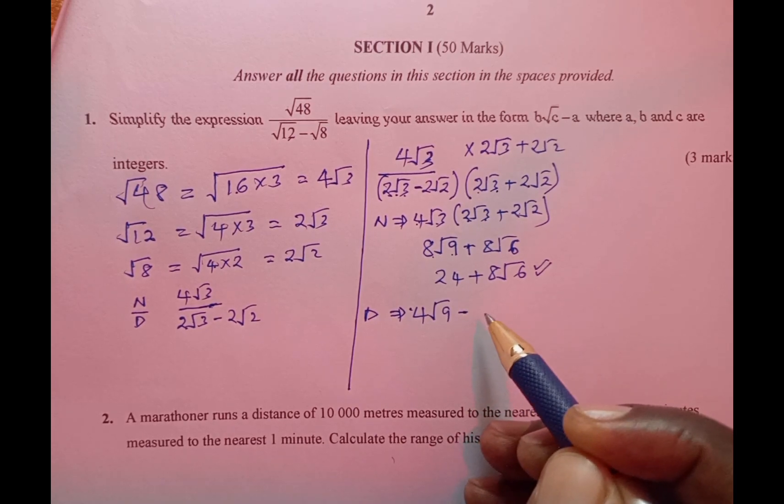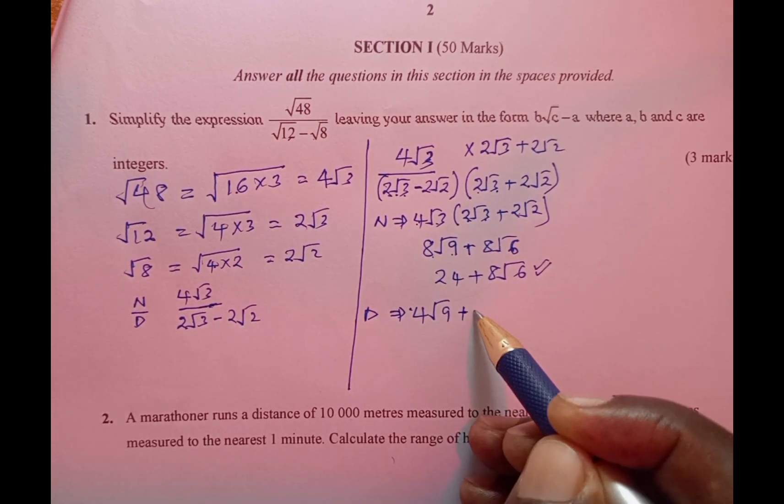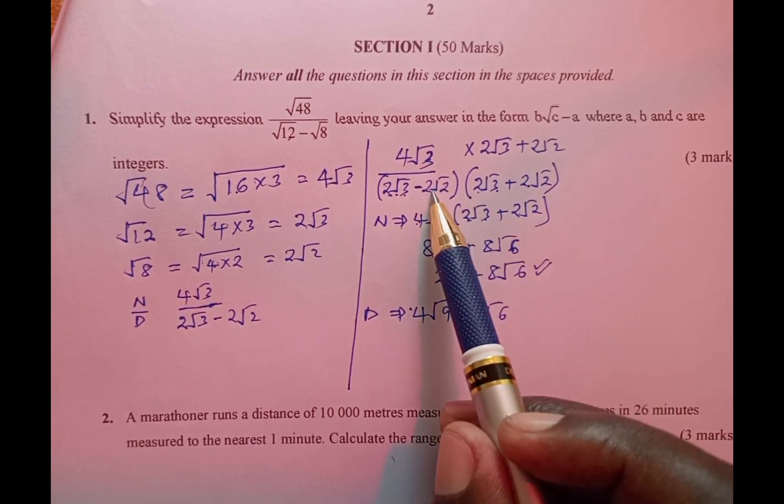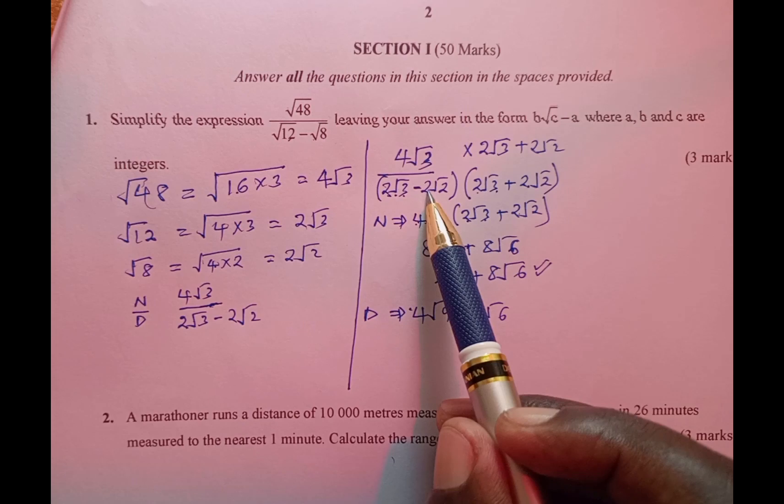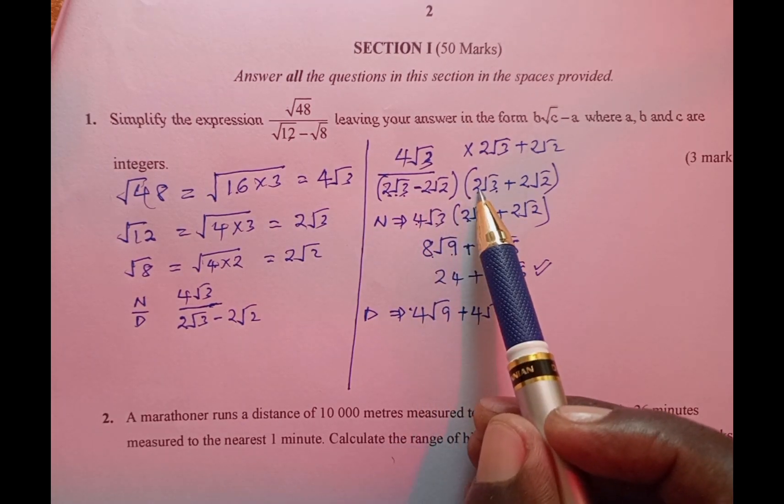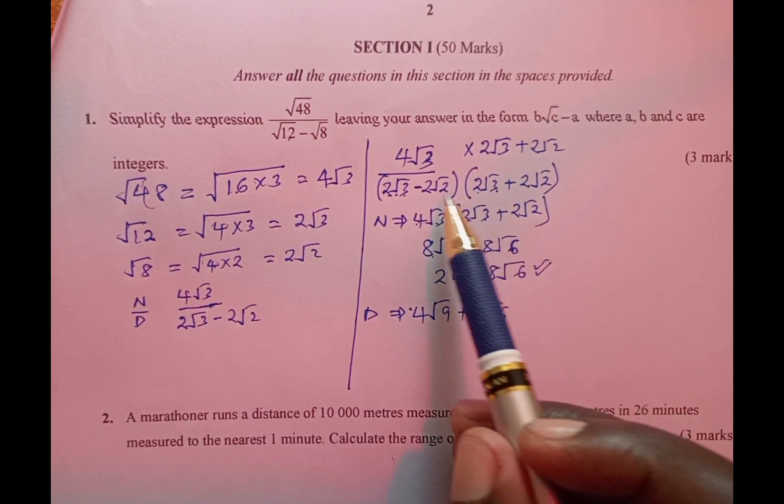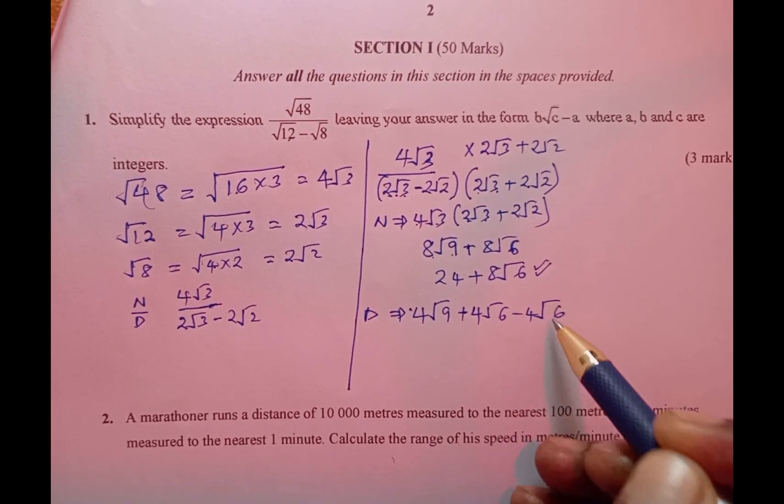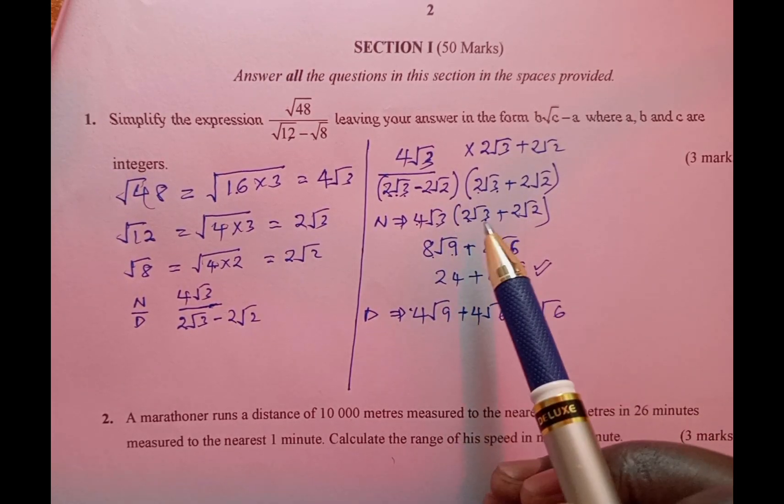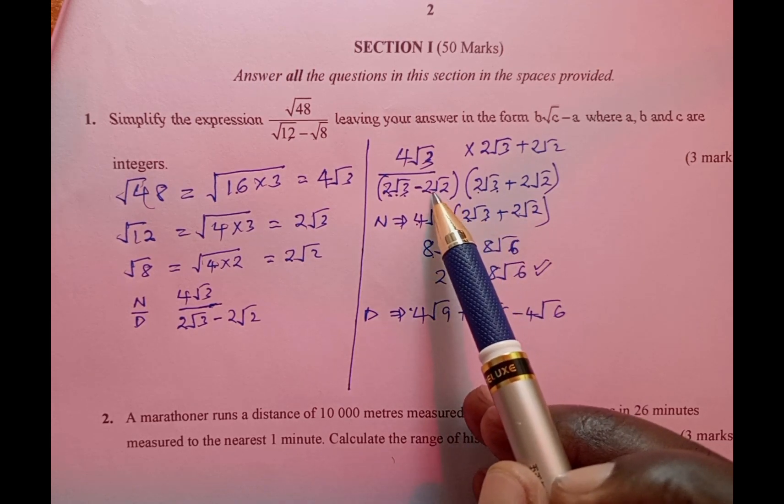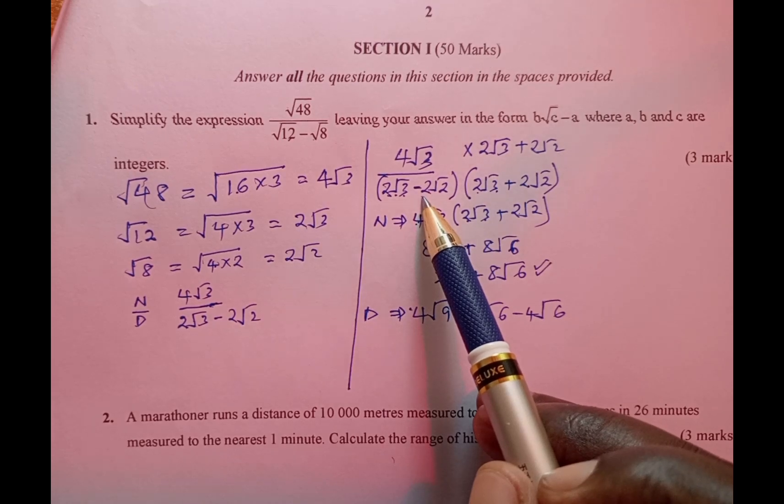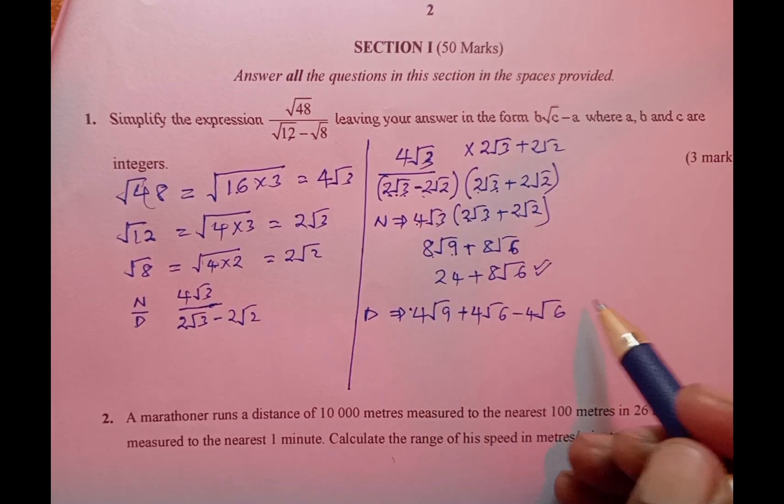That is a plus 4√6. Then again minus 2√2 multiplied by 2√3, this one is going to give us minus 4√6. Then lastly we have 2√2 multiplied by 2√2 giving us minus 4√4.